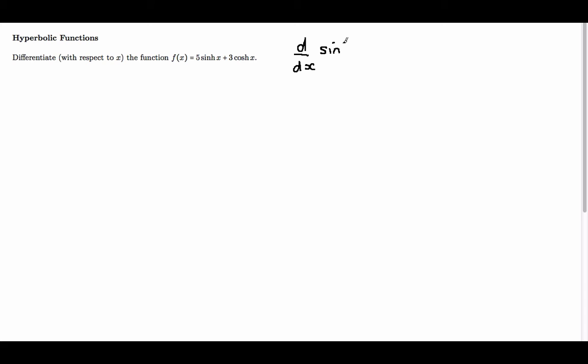To differentiate sinh x, we simply get cosh x. And to differentiate cosh x, we get sinh x.